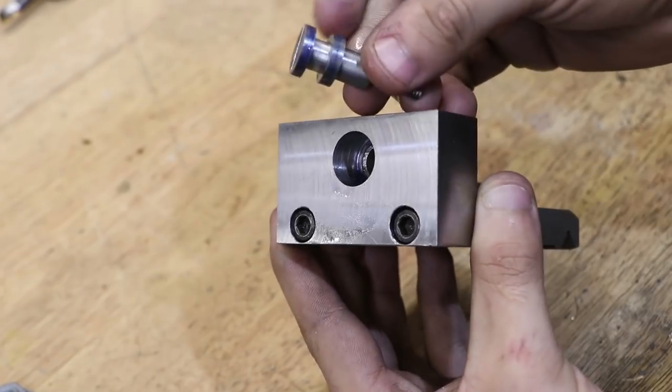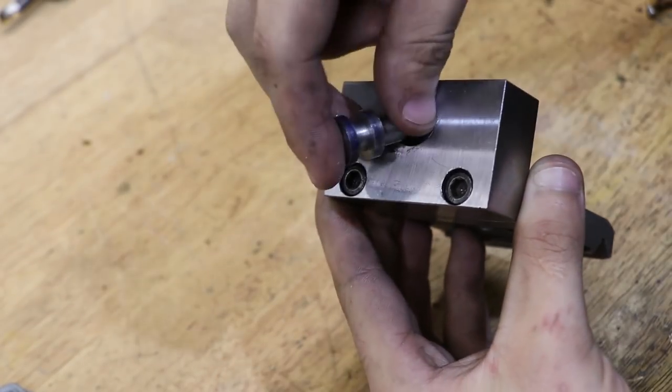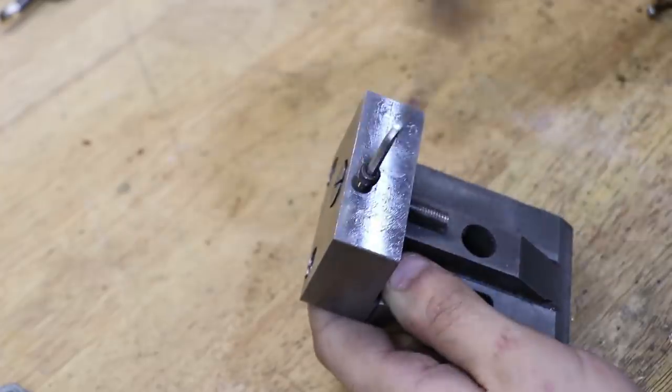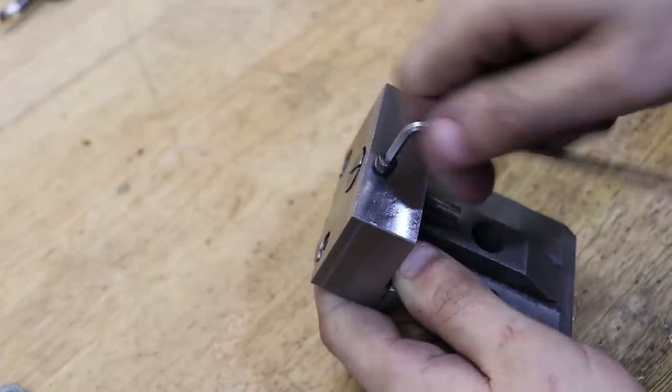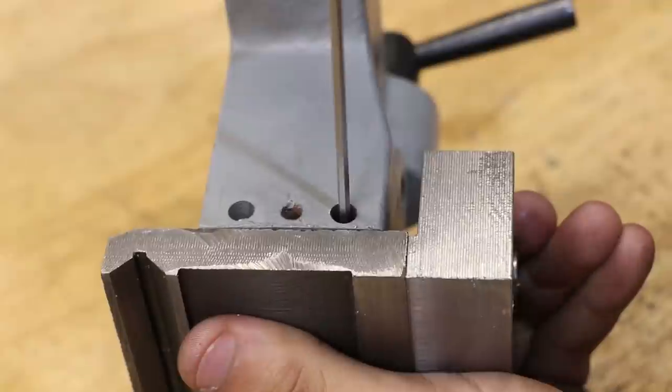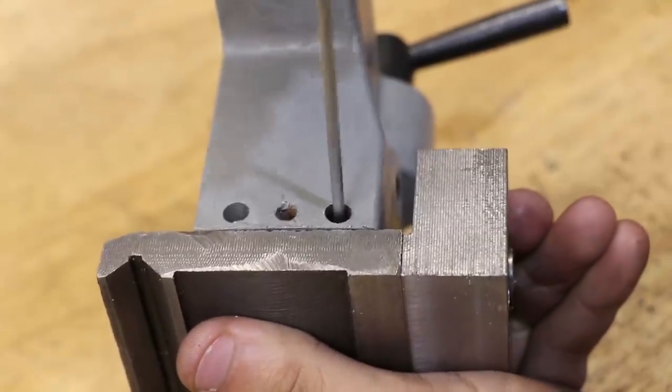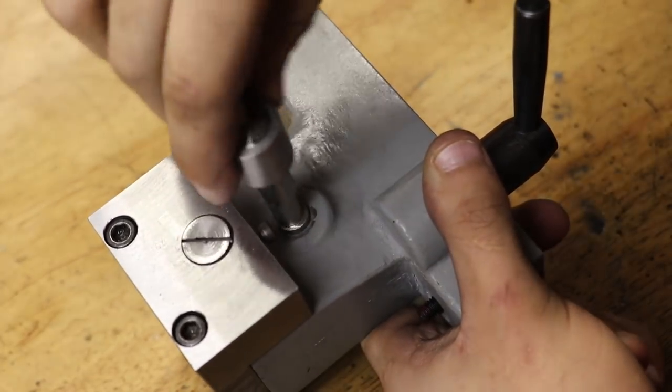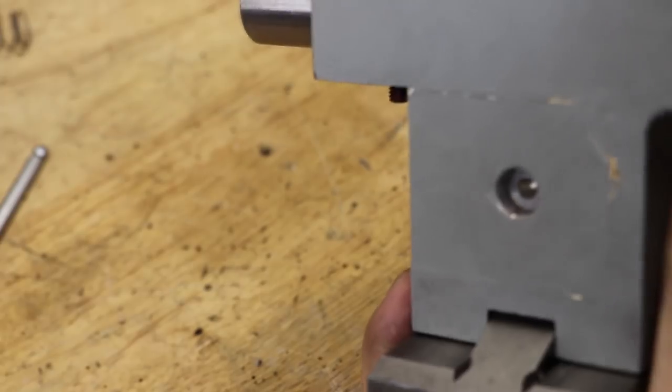And with that done it's time to assemble it. The adjustment screw gets placed into the hole and the M4 screw will make it captive. Then the upper half of the tailstock is screwed in. The new locking screw will also get screwed in. And the rest of the tailstock will get reassembled however the tailstock came apart.